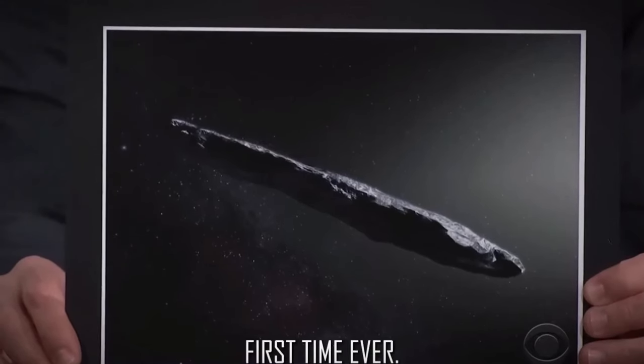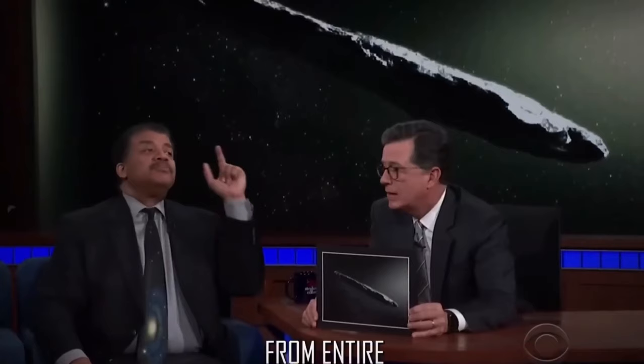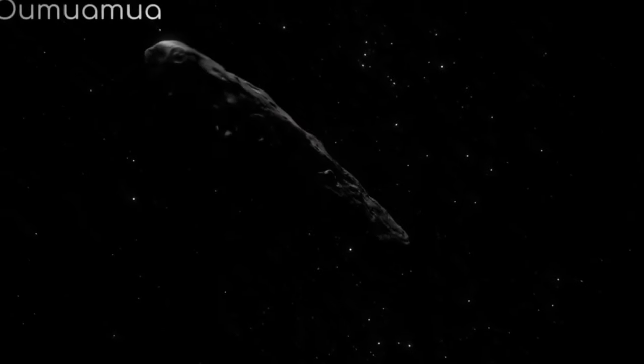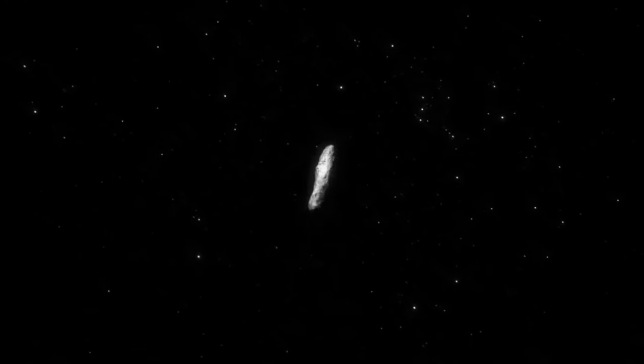NASA just warned that Oumuamua is on a trajectory to clash with Earth and it isn't stopping. When news broke in 2017 about a mysterious flying object that approached Earth with an unusual orbit, it caused quite a stir. Upon careful examination, scientists determined that this alien probe originated from somewhere between the stars and interstellar space.